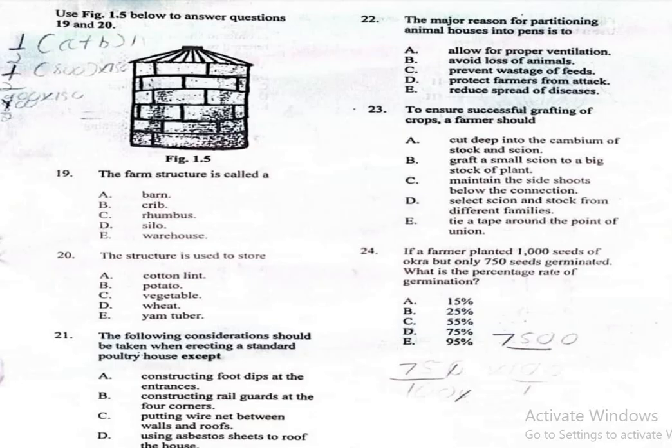Question 19. Use figure 1.5 below to answer questions 19 and 20. The farm structure is called: A. Barn, B. Creep, C. Rhombus, D. Silo, E. Warehouse. It is a silo, which is option D.